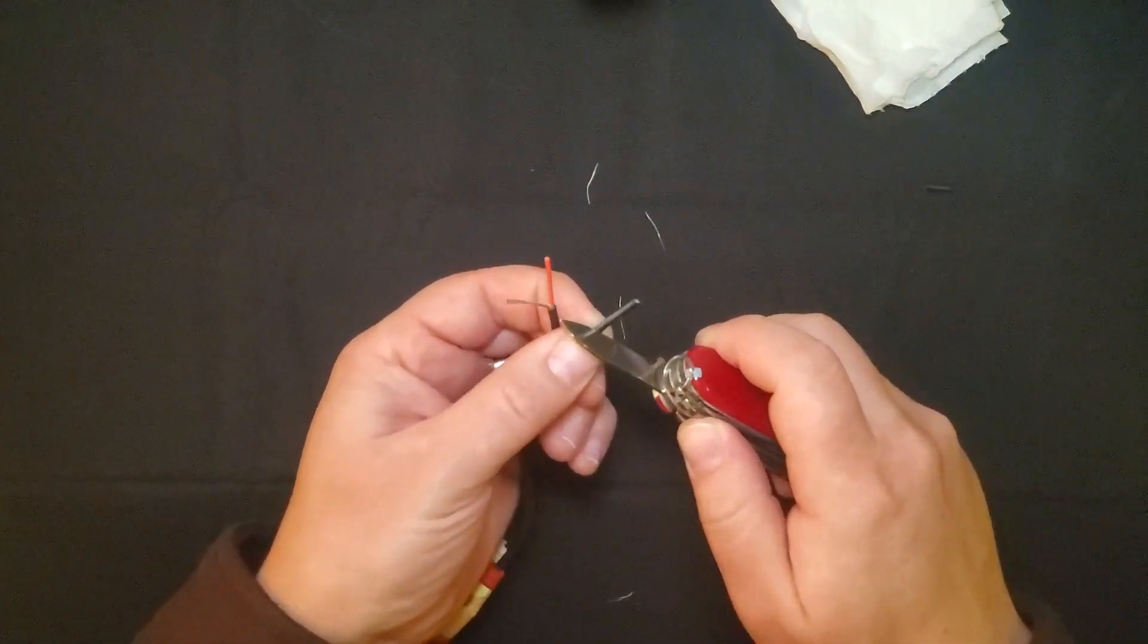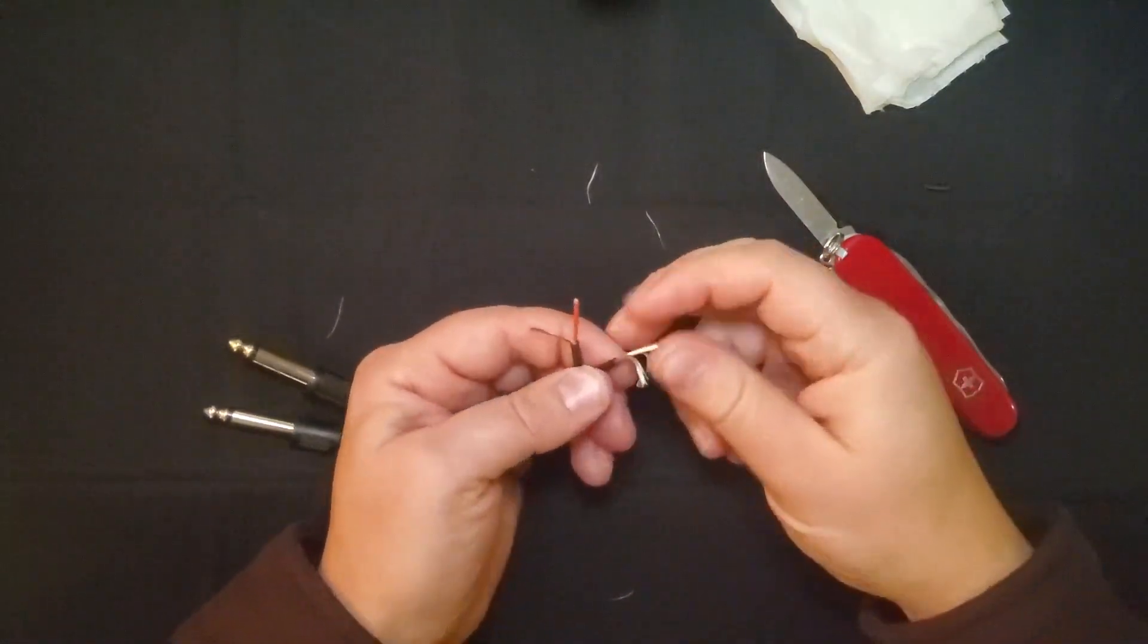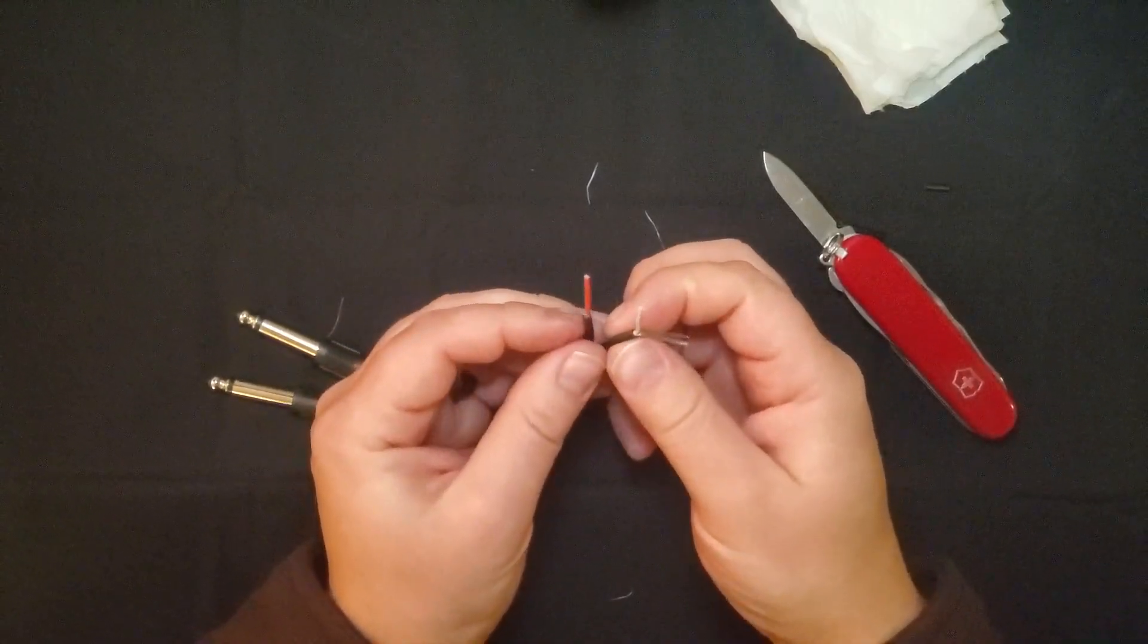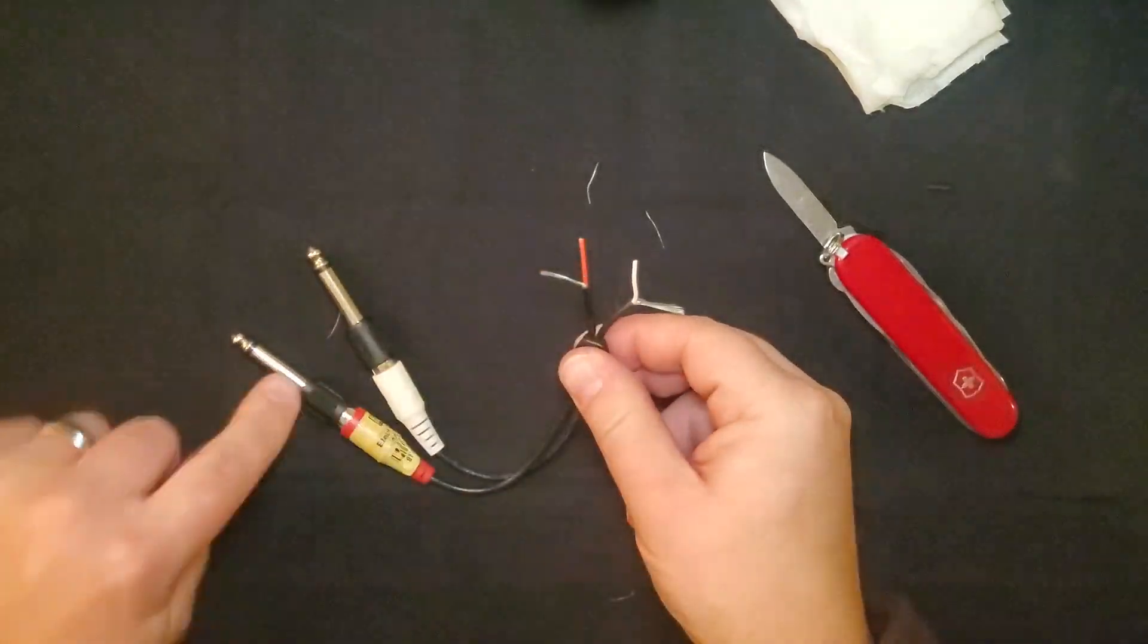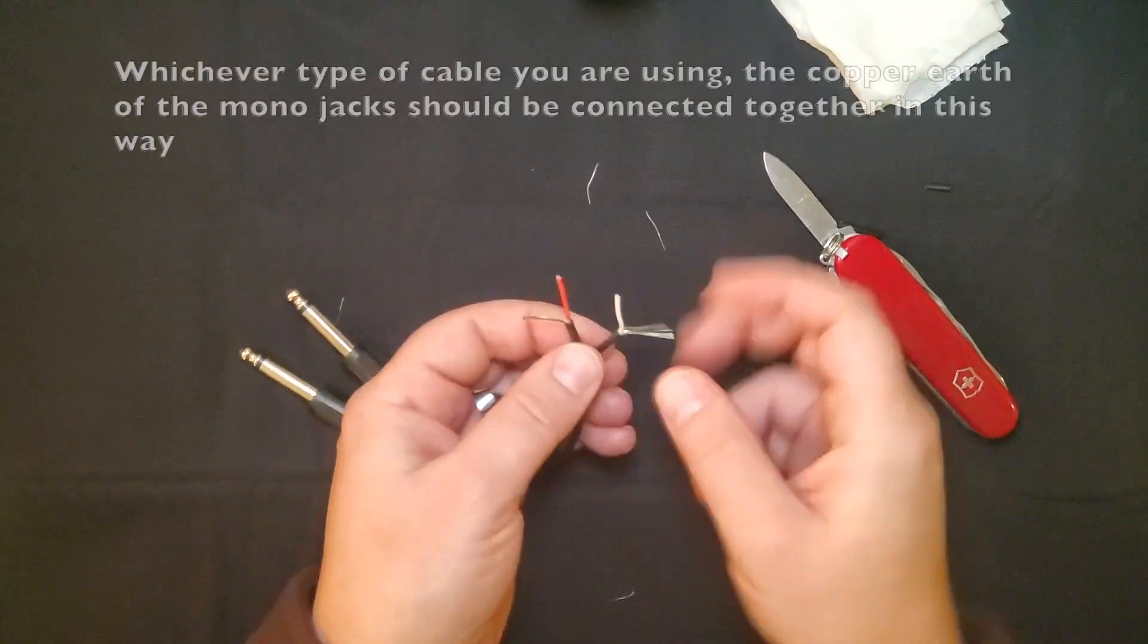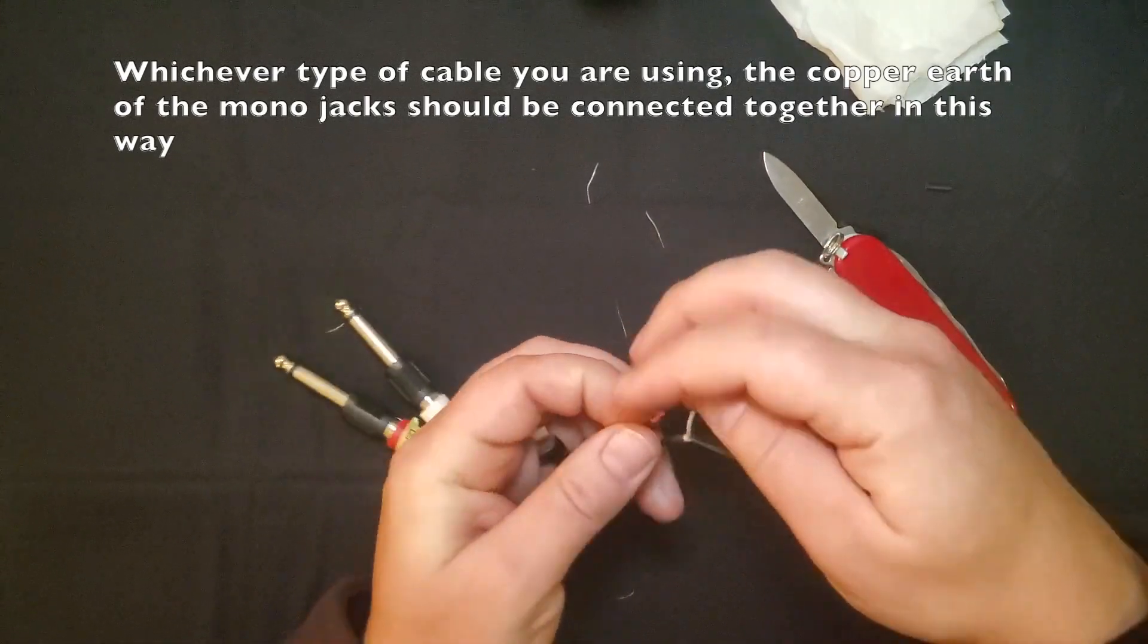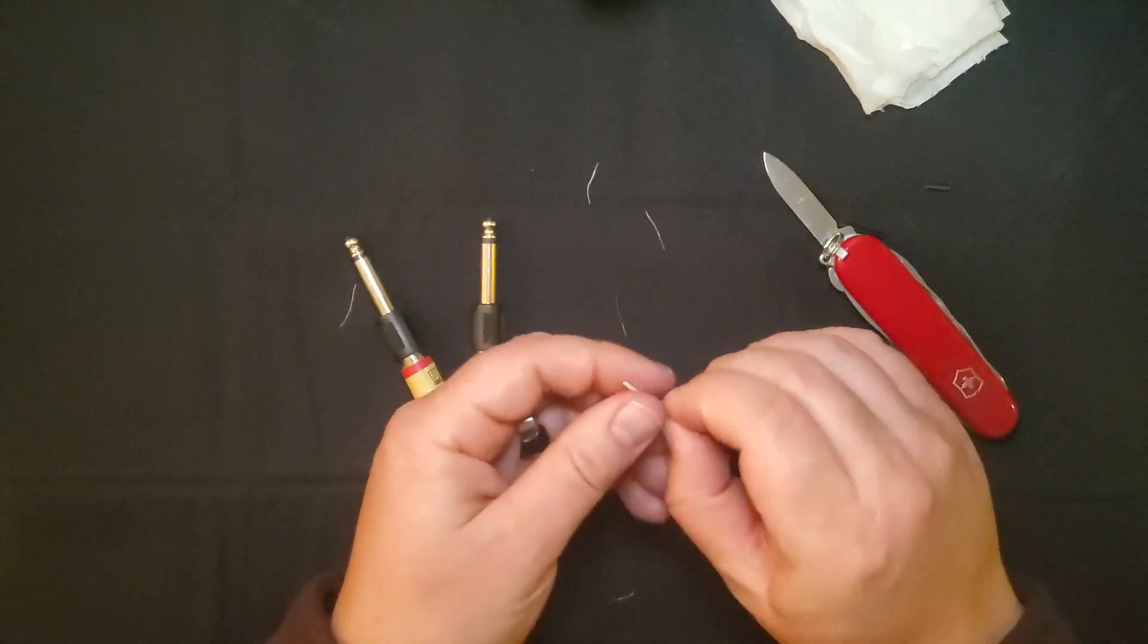And to repeat on side two. Now all that's left to do is to connect both of the copper wires together because they're a shared earth that goes to the two sleeves. So I bring them together and twist them a few times to bind those up into one single thread.